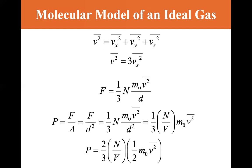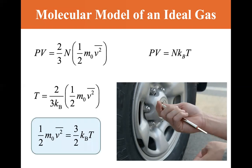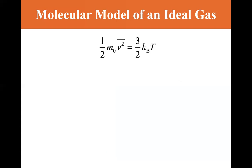Pressure equals one-third N m₀ average v² over d³, which equals one-third N over V times m₀ average v², since d³ is the volume. So pressure equals two-thirds times (N/V) times one-half m₀ v². Equating this to the ideal gas law PV = Nk_BT, we find that temperature T equals (2/3k_B) times one-half m₀ v². This means the kinetic energy one-half m₀ v² equals (3/2) k_B T — so the kinetic energy of a molecule is (3/2) k_B T.